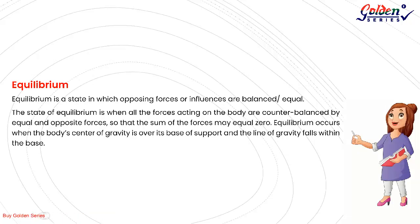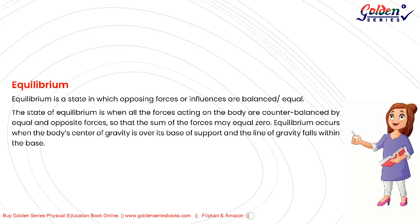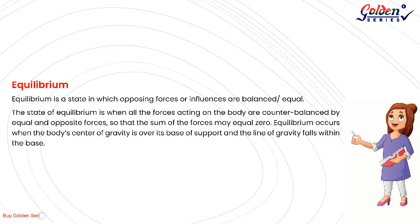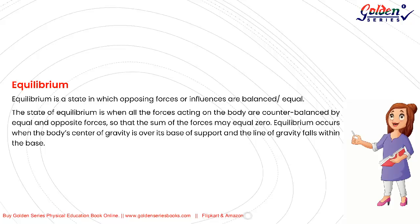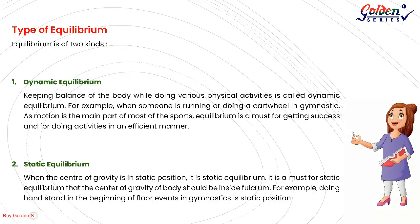Equilibrium. Equilibrium is a state in which opposing forces or influences are balanced and equal. The state of equilibrium is when all forces acting on the body are counterbalanced by equal and opposite forces, so that the sum of the forces equals zero. Equilibrium occurs when the body's center of gravity is over its base of support and the line of gravity falls within the base.